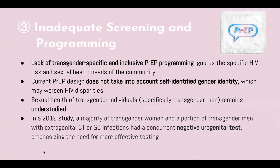Another shortcoming is inadequate screening and programming within facilities. The lack of transgender-specific and inclusive PrEP programming ignores the specific HIV risk and sexual health needs of this community, forcing them to seek out PrEP with a design that has not affirmed or taken into account self-identified gender identity. By devaluing and ignoring gender identity within HIV research, HIV disparities may even be worsened. It's also important to note that the sexual health of transgender men remains understudied. In a 2019 study, a majority of transgender women and a portion of transgender men with extra-genital chlamydia or gonorrhea infections tested negative on a urogenital test, suggesting these infections would have been missed by this type of screening alone, highlighting the importance of more effective testing and obtaining comprehensive sexual histories.